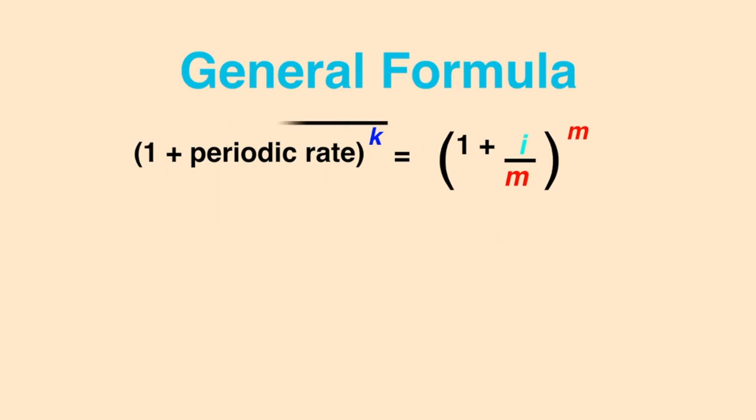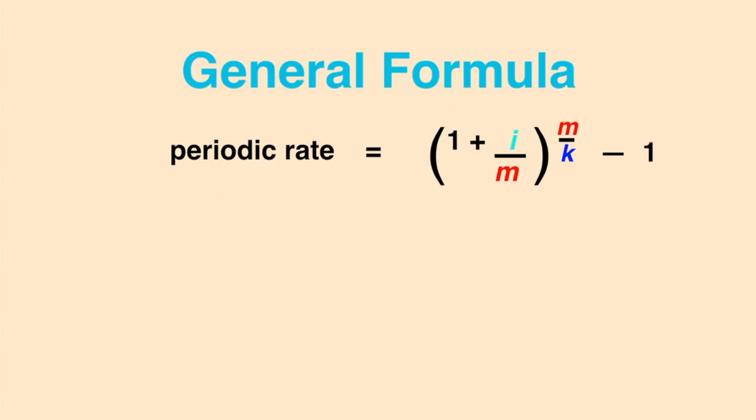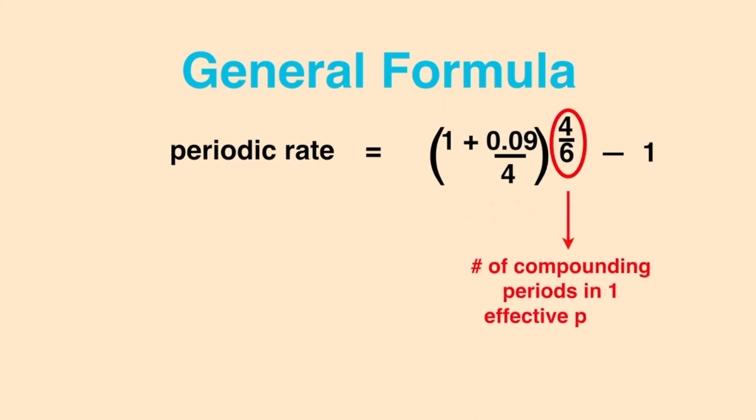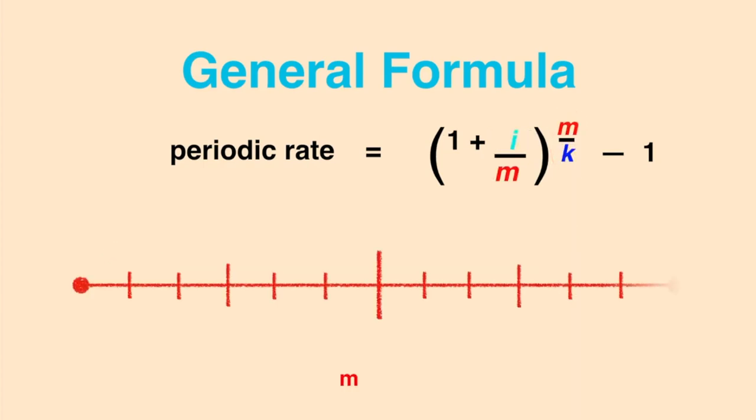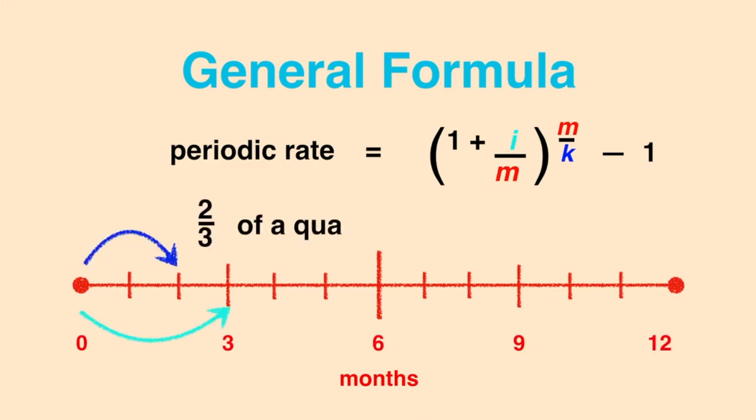Isolating for r, we get r equals 1 plus i over m to the power of m over k minus 1. We can plug in the figures from our previous example. 1 plus 9% over 4 to the power of 4 over 6 minus 1 gives us 1.49% again. Our fractional exponent essentially tells us how many compounding periods there are in one of our effective periods. Here, we have 4 over 6. Thus, there's two-thirds of one compounding period in our two-month effective period. From the timeline, you can see that because there are three months in a quarter, then two-thirds of a quarter is equivalent to a two-month period.